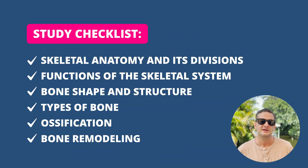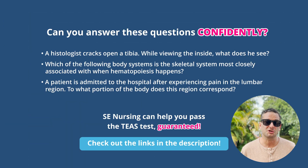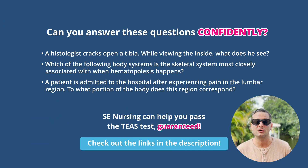For the skeletal system, the exam will expect you to answer questions on its anatomy and functions. You'll see topics like how bones are formed, how they're remodeled, and how bone development changes as a person grows from infancy to adulthood. The skeletal system has two main parts — the axial skeleton and the appendicular skeleton — and consists of bones, cartilage, and ligaments. You should know the different types of bones: long, flat, irregular, sesamoid, and short bones.